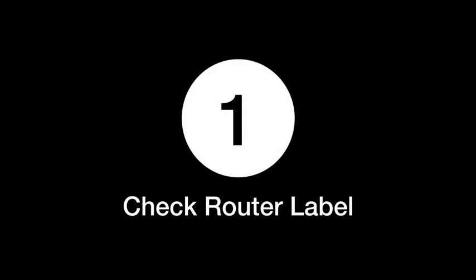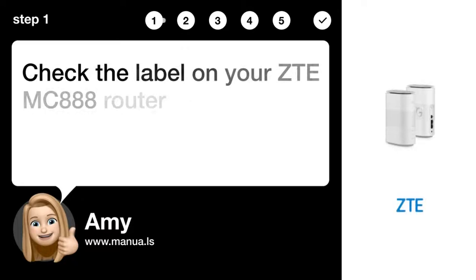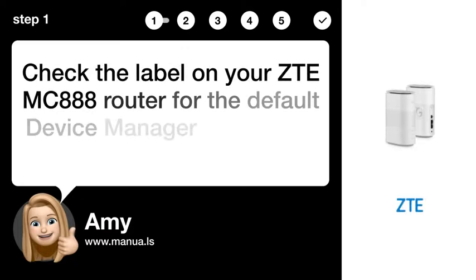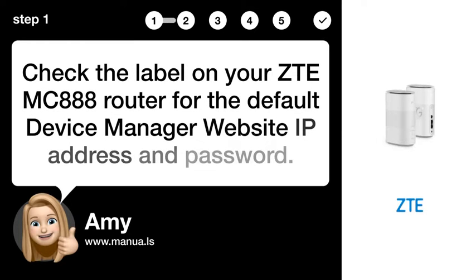Step 1: Check Router Label. Check the label on your ZTEMC-888 router for the default device manager website, IP address, and password.